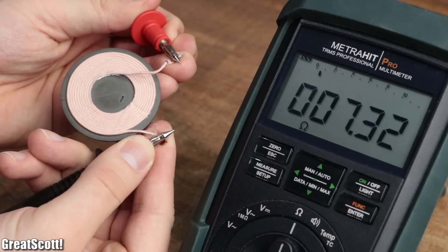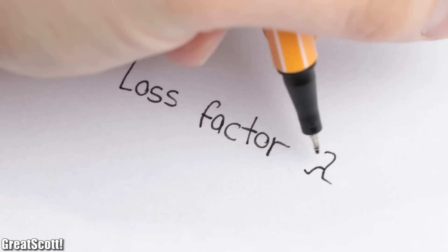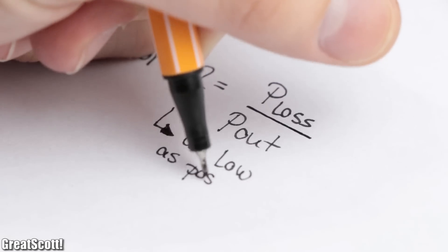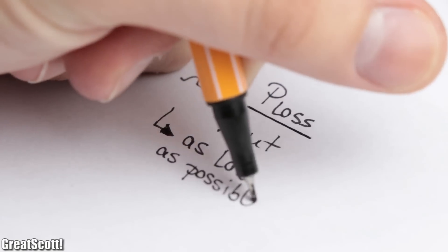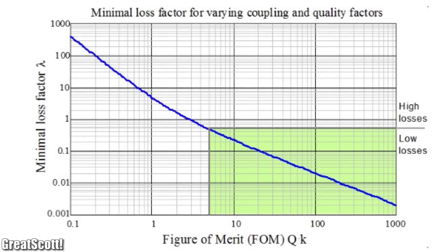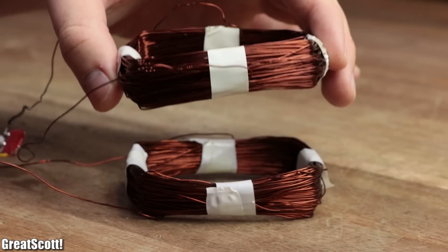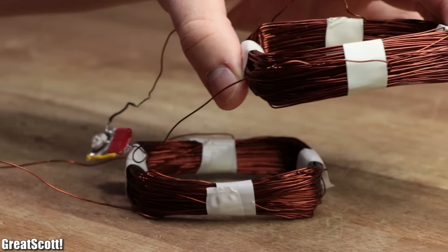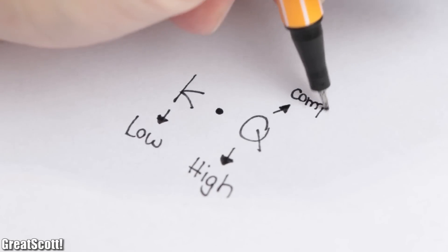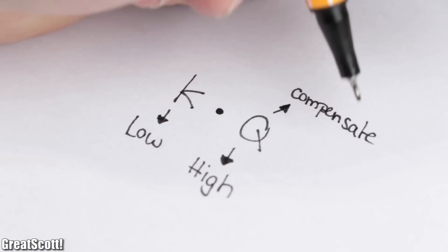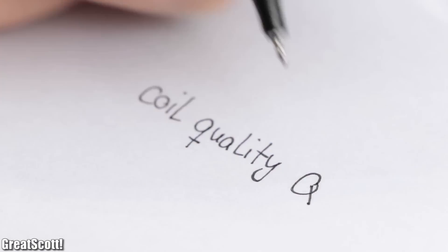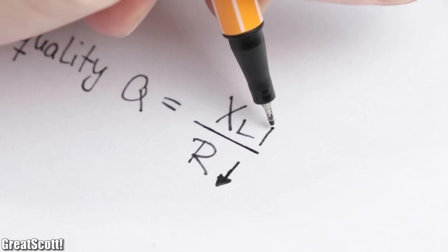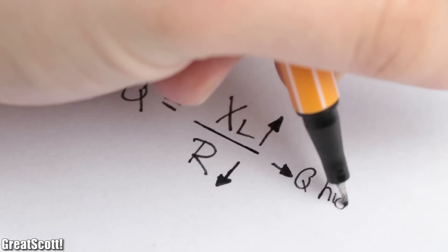But why is resistance so important? The loss factor, which describes the relation between the power loss and the overall output power — which we obviously want as low as possible — becomes lower with a higher product of K and Q. K is dependent on the positioning of the coils relative to one another, which will always be quite low due to air coupling. So we need a high value of Q to compensate and keep power losses low. This Q value is the coil quality, which equals the inductive reactance divided by the resistance.